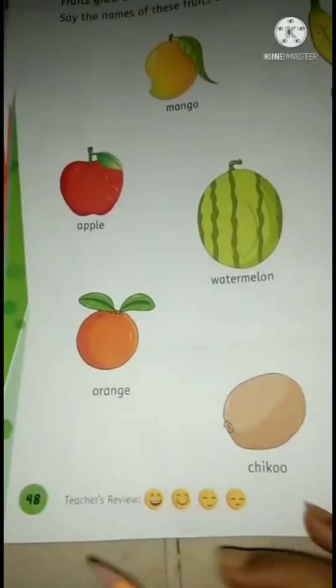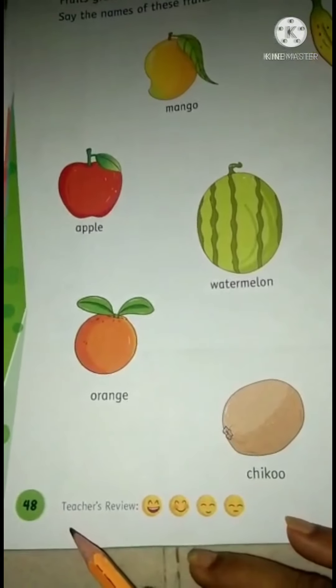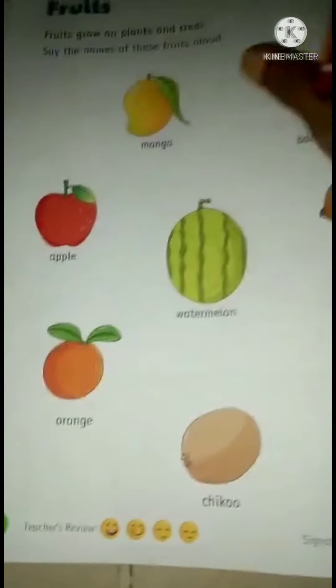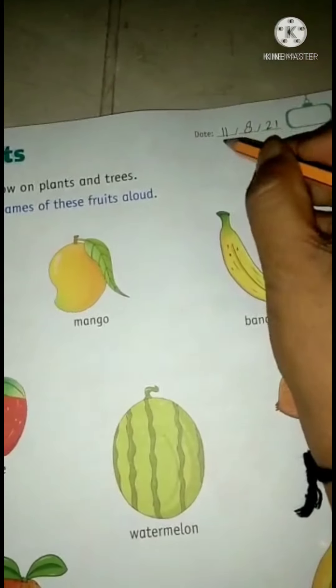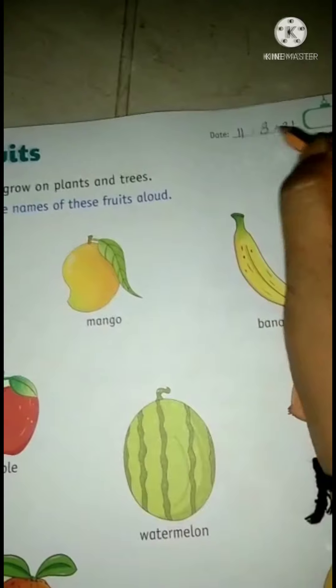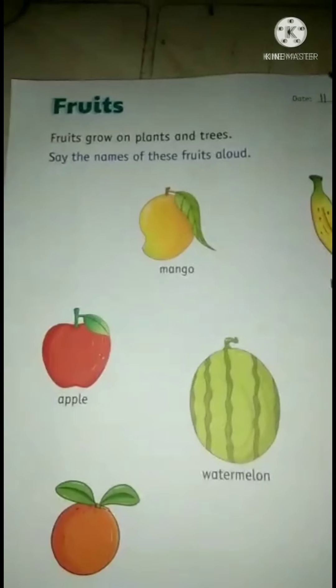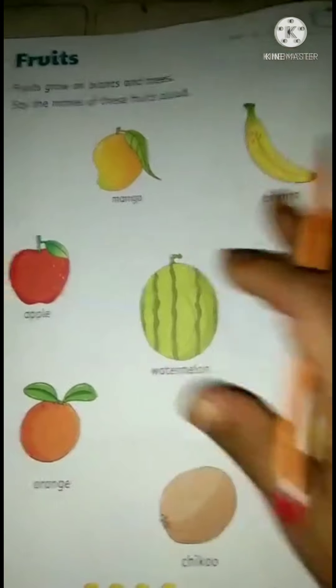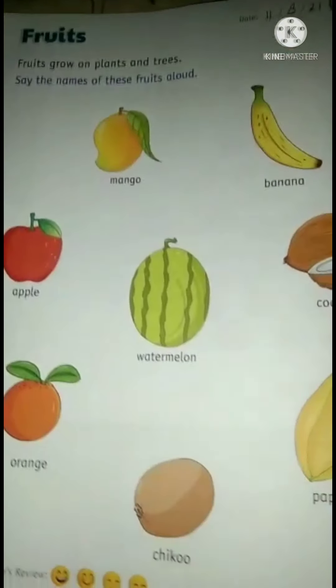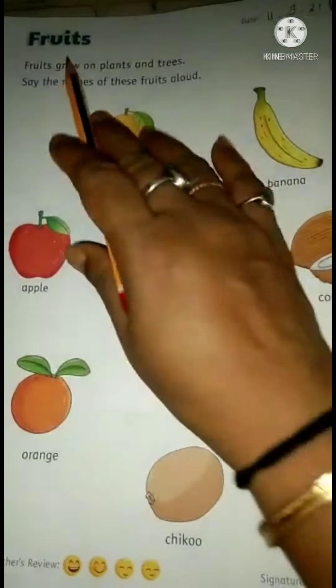Hello, Jai Swaminarayan kids. See in book number 4 on page number 48, write down the date first — it is 11th August 21. Now today we will see the names of the fruits.